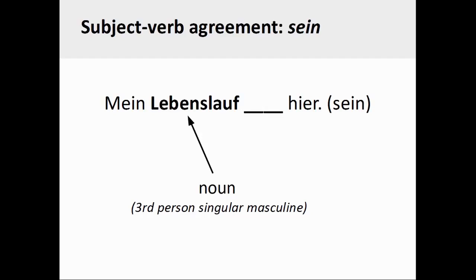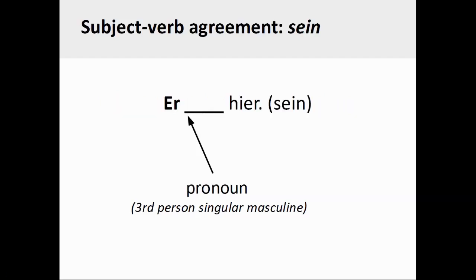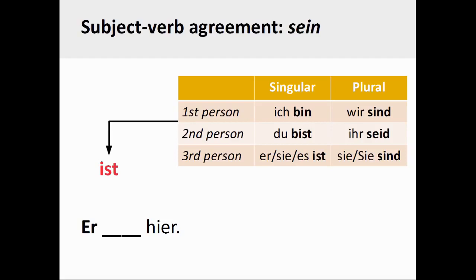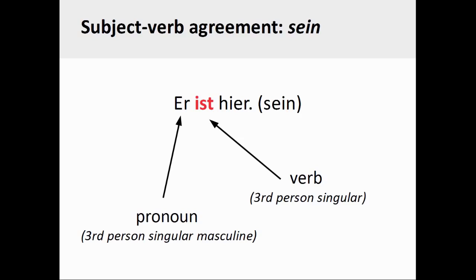Furthermore, I am not the Lebenslauf and neither am I talking directly to it, meaning that the subject of the sentence cannot be in the first or second person. By excluding these other options, I can deduce that Lebenslauf must be a third person singular masculine noun. I can test this deduction by replacing the noun with a personal pronoun, which is also in the third person singular. Now that I have determined that the subject of the sentence is in the third person singular, I take the infinitive of the irregular verb sein and look for the matching third person singular form in the conjugation pattern. I then take this form, ist, and drop it into the sentence. The completed sentence, er ist hier, manifests subject-verb agreement in that both the pronoun and the associated verb are in the third person singular.